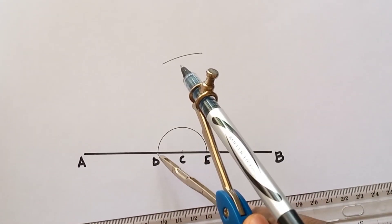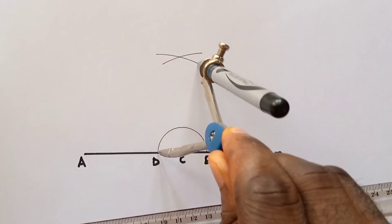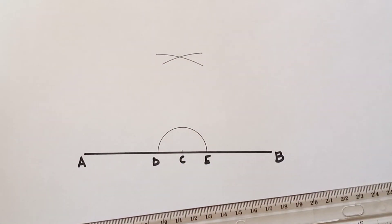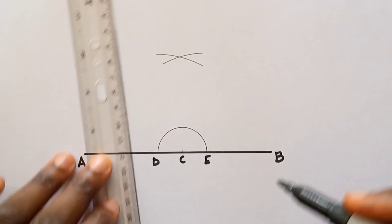You now place it at D and inscribe another arc. So where these two arcs intersect together is your perpendicular.